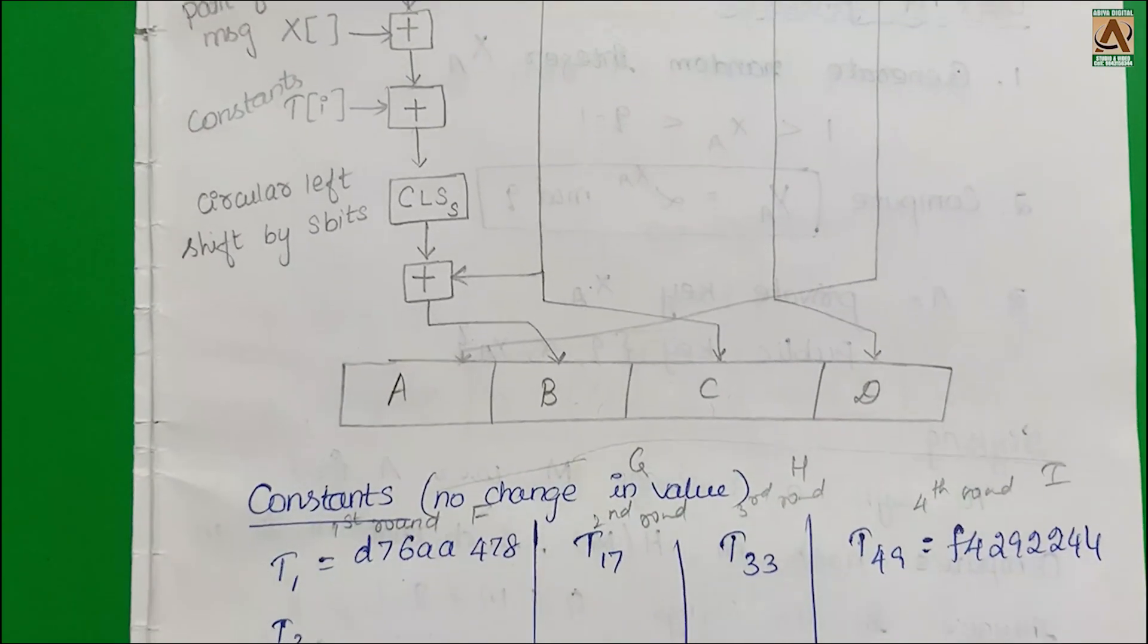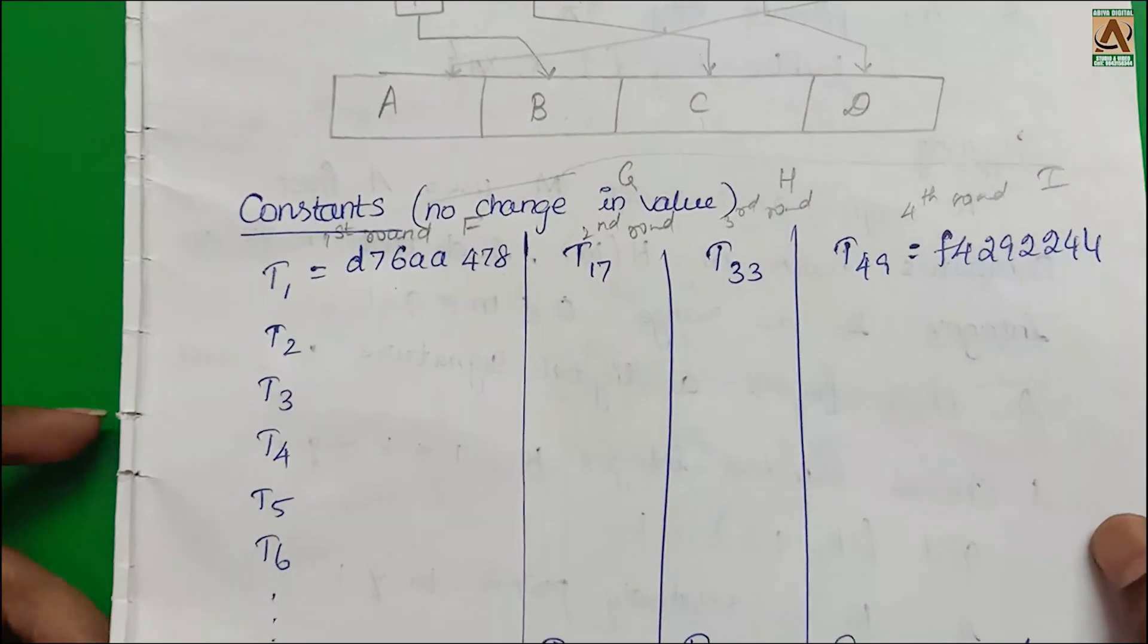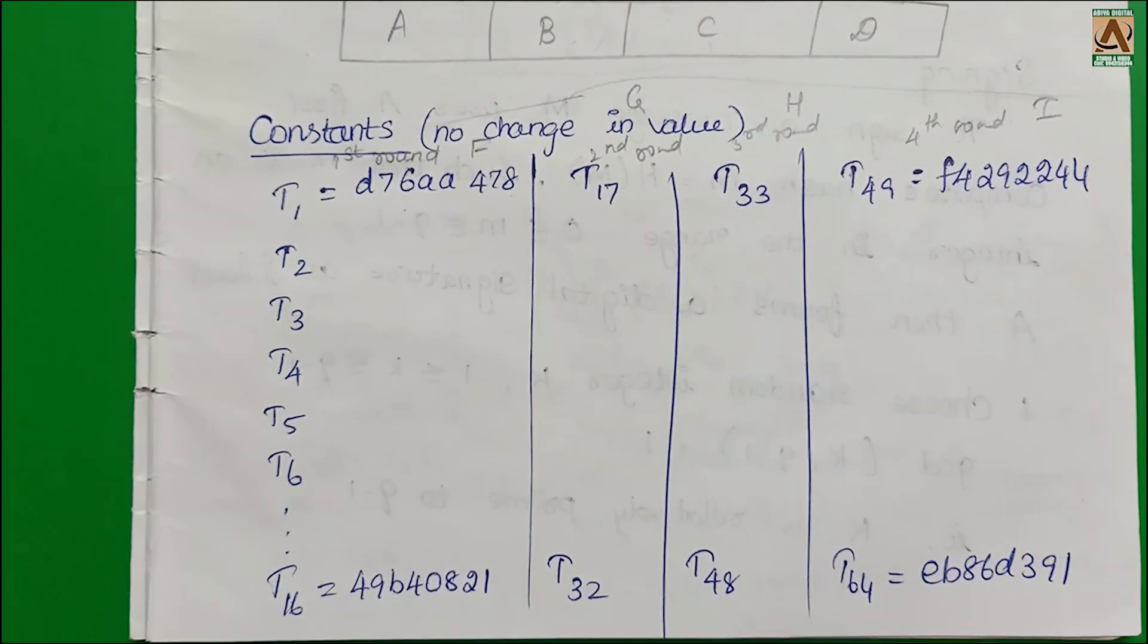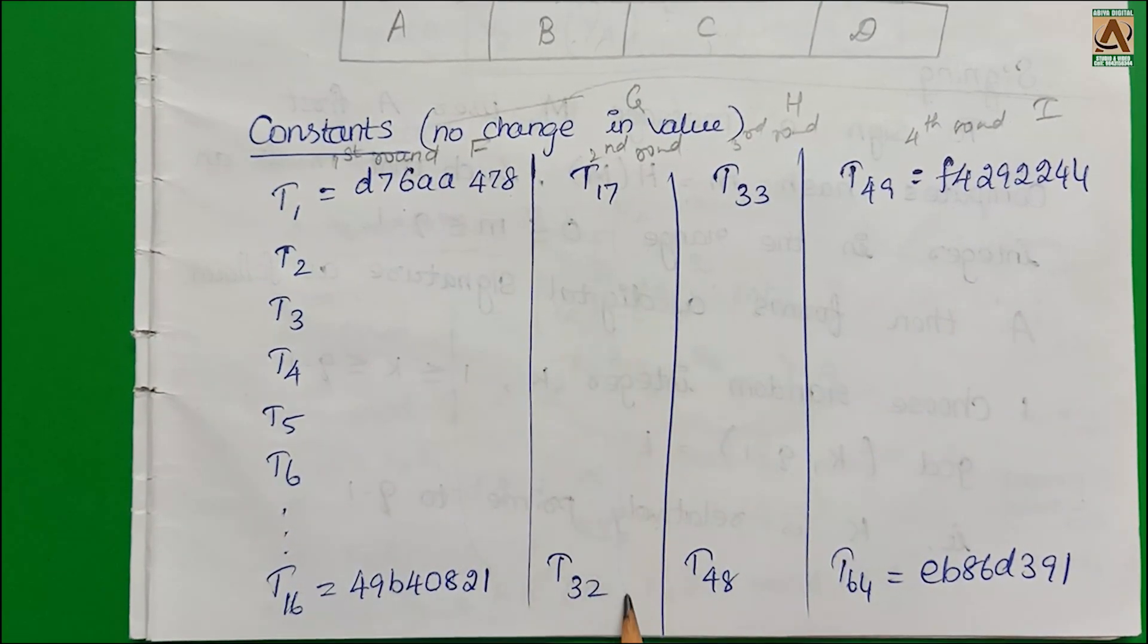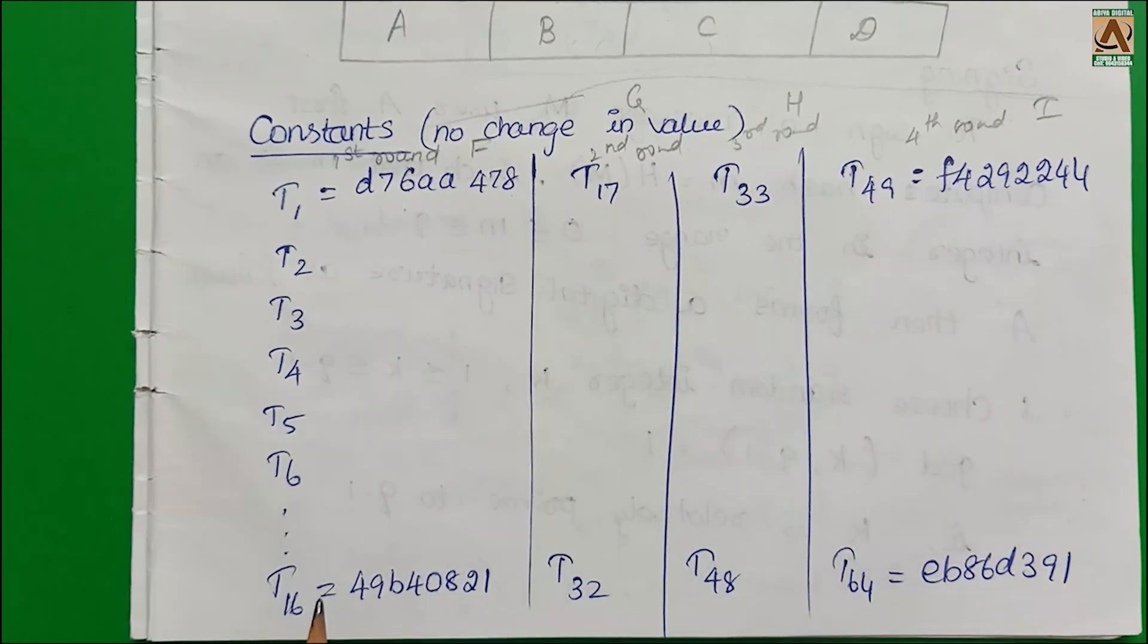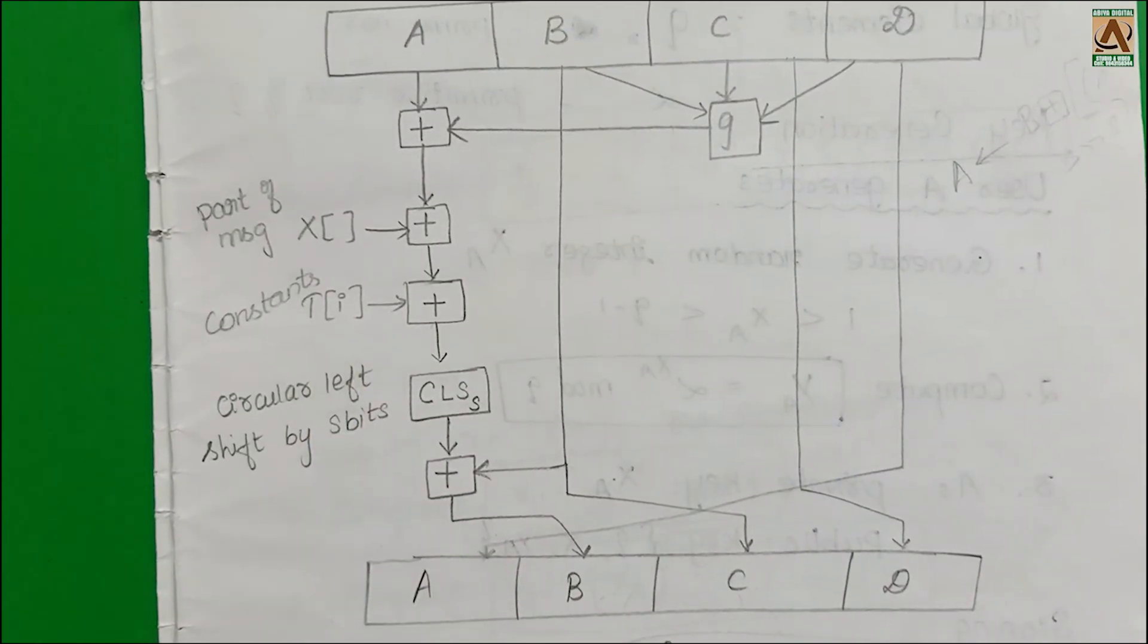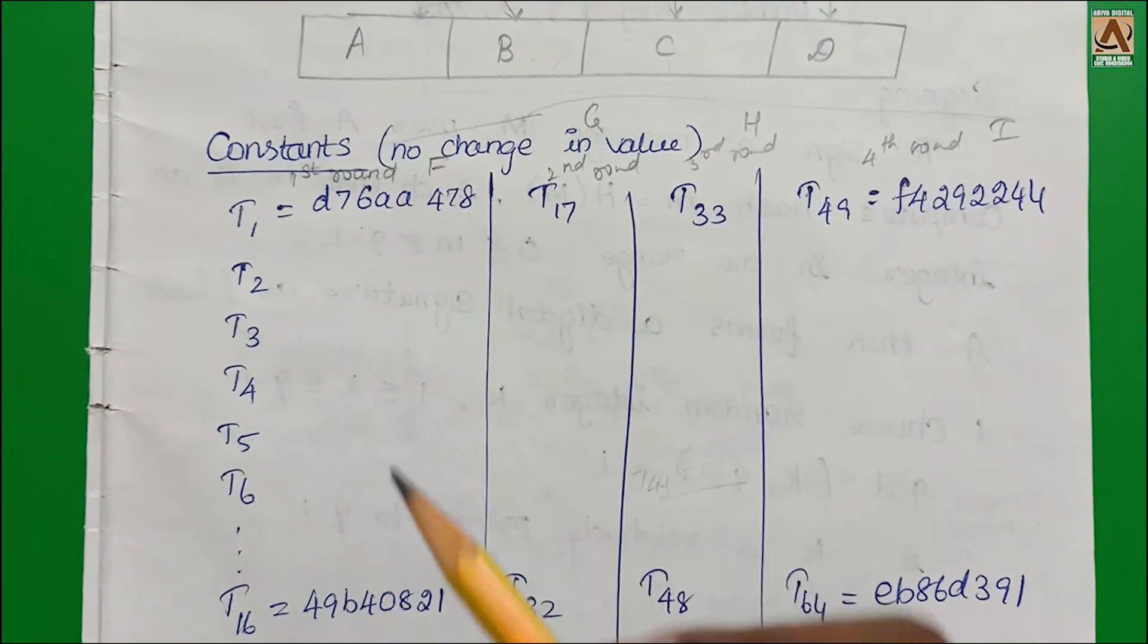Next, constants. The values change - we give the constant value. In case of a problem, you can use the values table. T1 to T64 have specific values. We use these constant T values for solving problems.